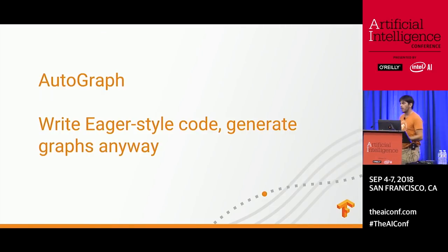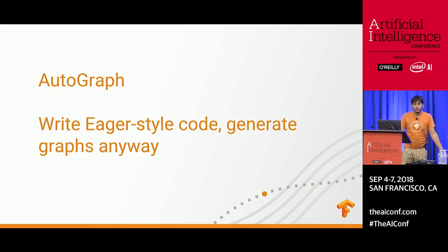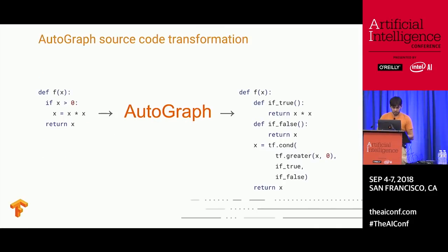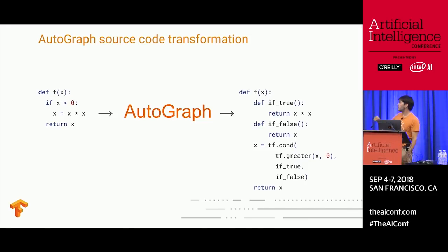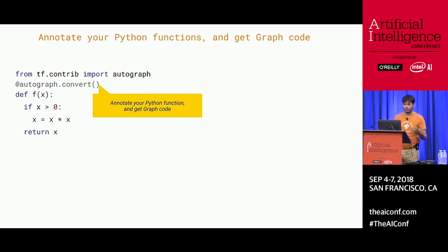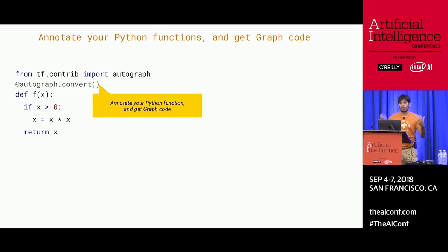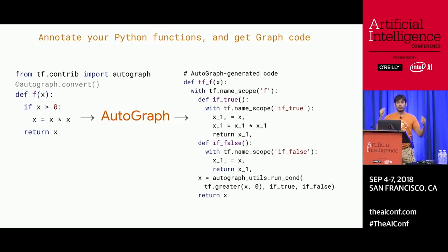What if we could do better than this? Autograph is the tool we've been working on in the Google Brain Cambridge office that tries to do exactly that. It lets you write eager-style Python code and have a compiler turn this into the complicated graph-style code. Because if you look at the transformations that need to happen to turn the code on the left into the code on the right, that looks like something that can be automated — and Autograph is indeed the thing that automates this transformation. It's in TensorFlow contrib now, and when 2.0 comes out it will be in core. You just import Autograph from contrib and decorate your function with autograph.convert, and under the hood Autograph will generate and run the more complicated code for you.